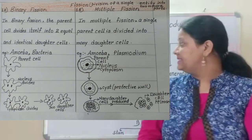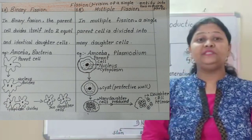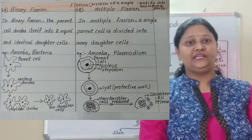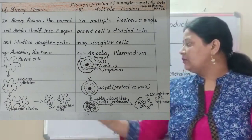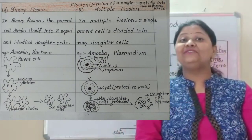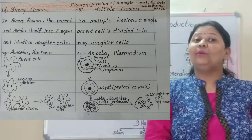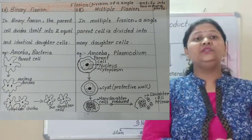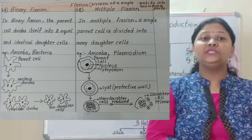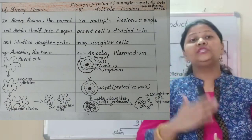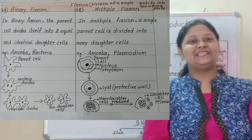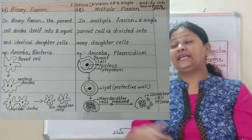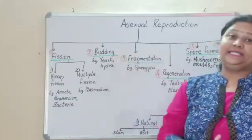Other examples: for binary fission, various examples are amoeba, paramecium, and bacteria — it is the mode of reproduction in these organisms. When talking about binary fission, the orientation can be in one direction or two directions — it can be longitudinal or horizontal, depending upon the organism. For multiple fission, examples include amoeba and plasmodium.